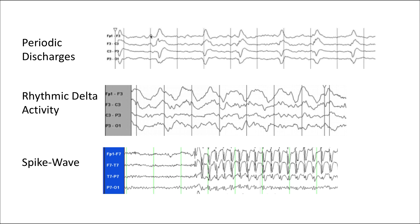With periodic discharges, you have a waveform followed by an inter-discharge interval, followed by the waveform, followed by the inter-discharge interval, and so on. The rhythmic delta activity in this example is continuous — there is no inter-discharge interval.